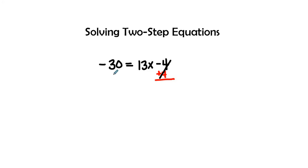But what we do on one side, we have to do on the other side. So here we're going to add positive 4 to the negative 30.